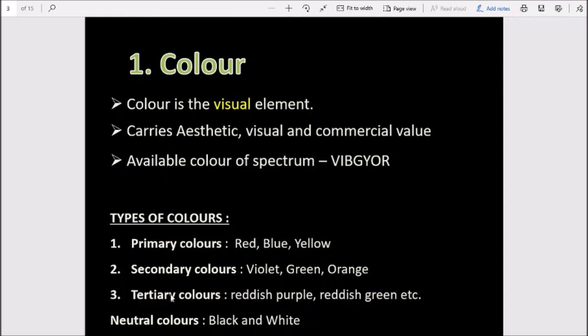Third, we have tertiary colors. Tertiary colors are formed from mixtures of primary and secondary colors. For example, if you mix red and violet, you get reddish purple. Red and green make reddish green. Similarly, blue and green make bluish green, yellow and orange make yellowish orange. So tertiary colors are formed from combinations of primary and secondary colors.